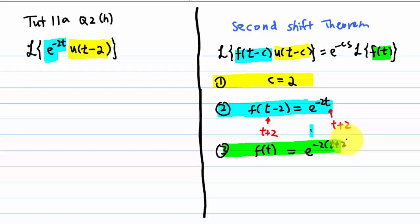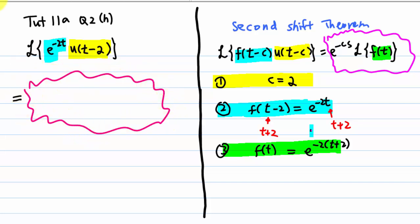So, the answer, according to the second shift theorem, this is equal to e to the minus 2s because c is 2, times Laplace transform of f, which is e to the minus 2 times t plus 2.